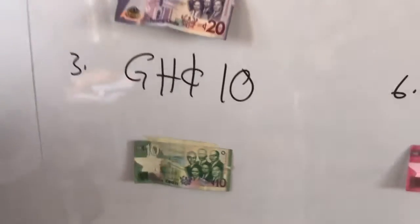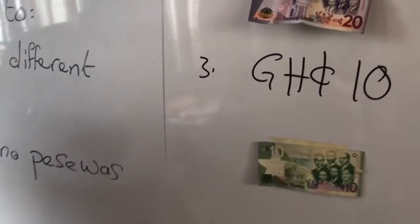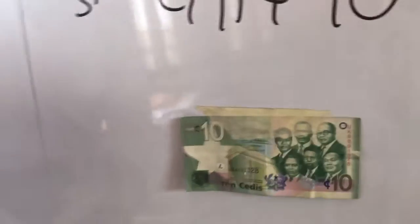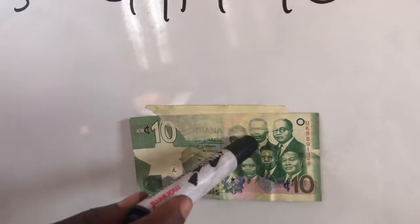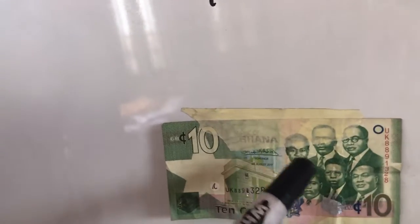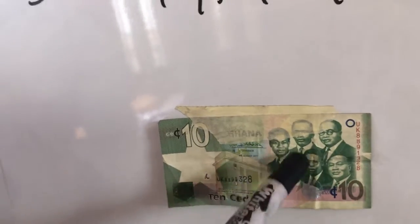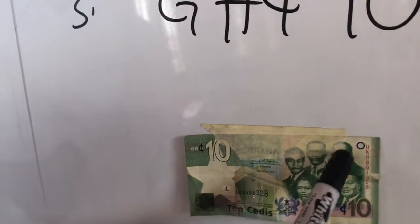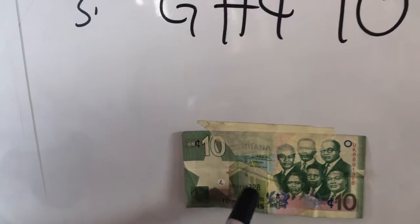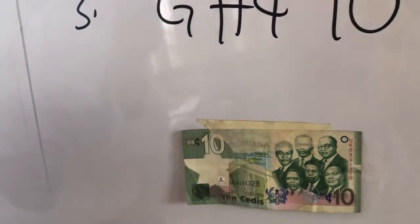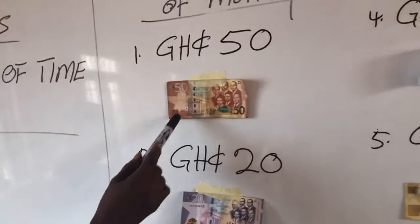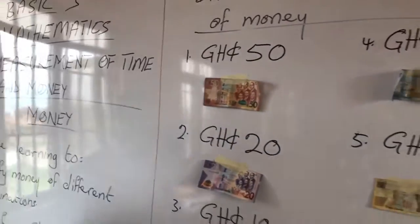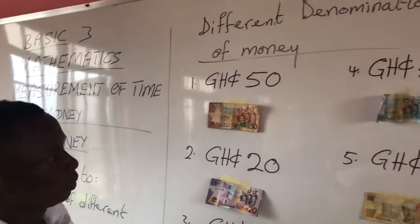Let's look at the 10 cedis note. We have the same people. I don't know their names, so ask your parents. When we resume, you will be telling me the names of these people. This is the 10 cedis note - look at the color of the note. Are they the same? Your parents will help you too.